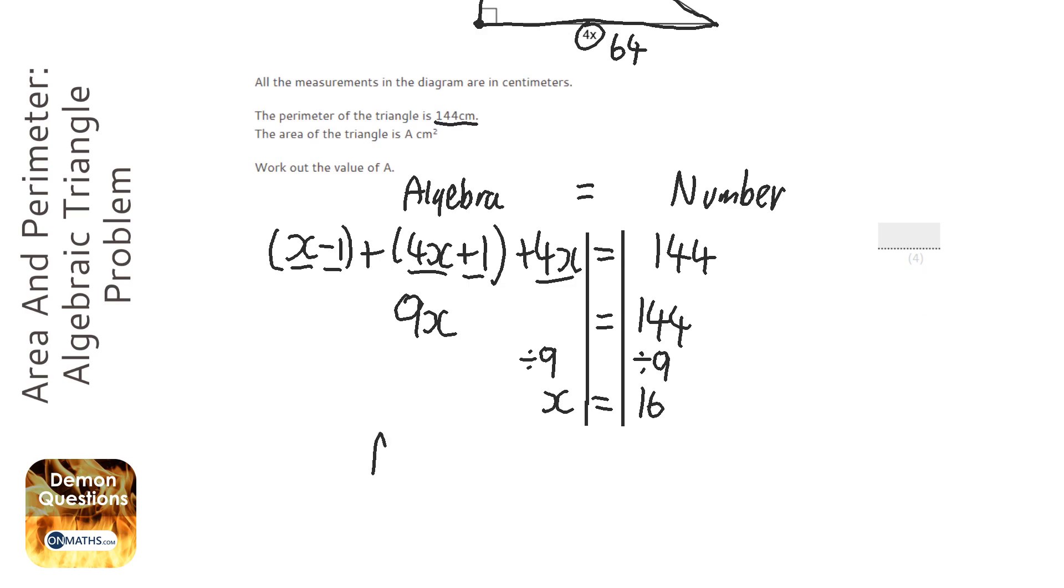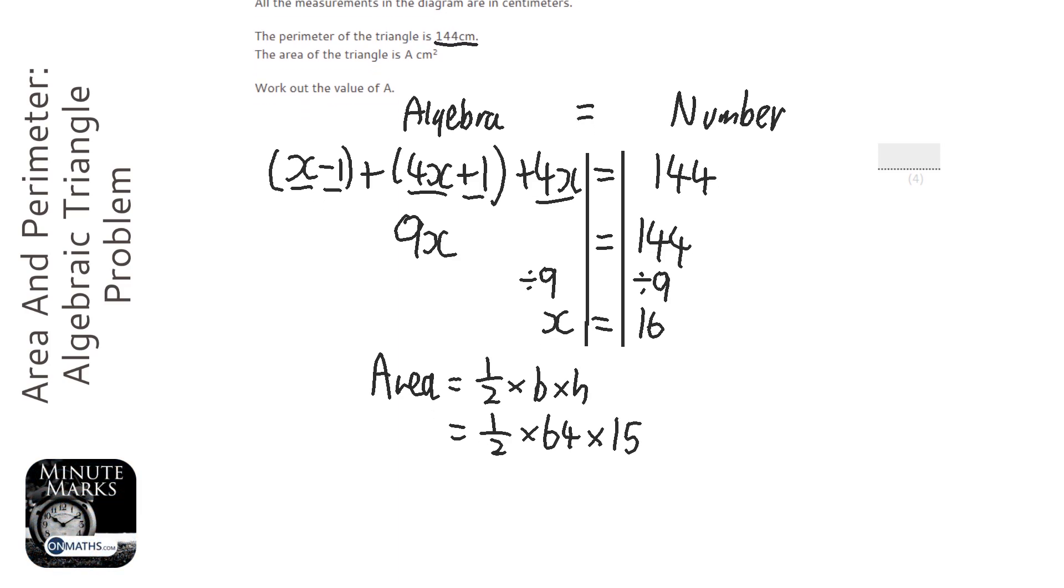Now to work out the area, we're going to do half times base times height. We've worked out that the base is 64 and the height is 15. So we're going to do 0.5 times 64 times 15, and it gives me the answer of 480.